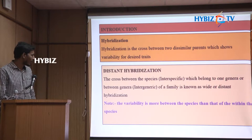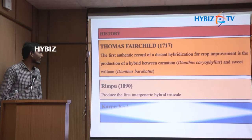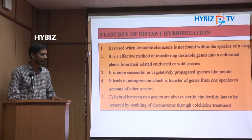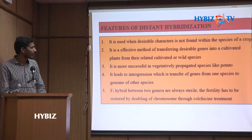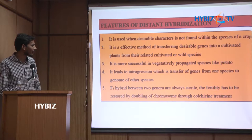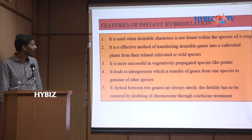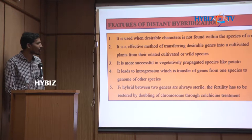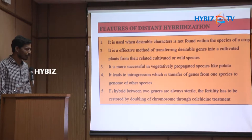As I have already mentioned, farmers focus only on higher yield, but there are resistant varieties available in other species apart from cultivated ones, so we go for distant hybridization. It is used when desirable characters are not found within the species of a crop. It is an effective method for transferring desirable genes. It leads to introgression, which is the transfer of genes from one species to the genome of another species.